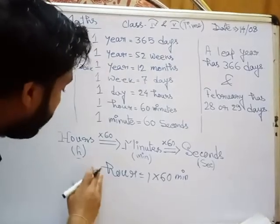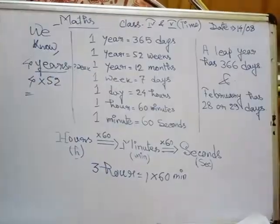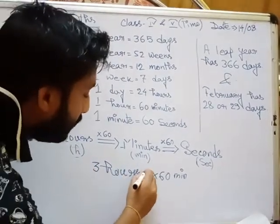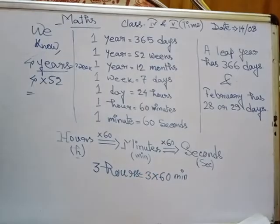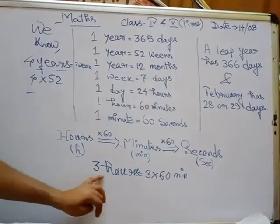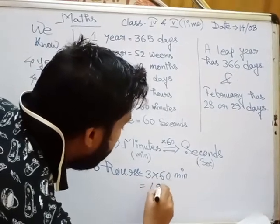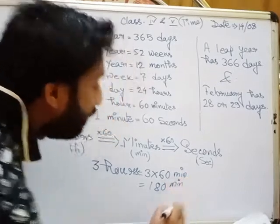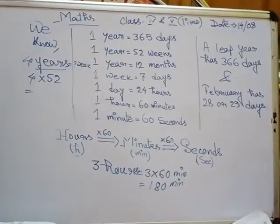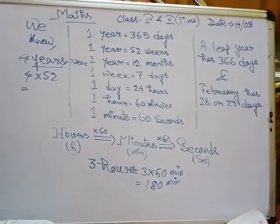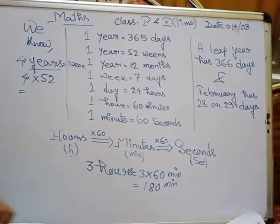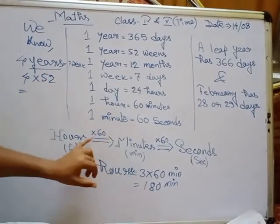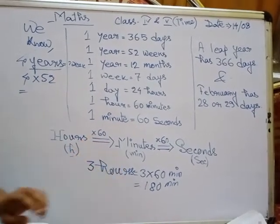If it is 3 hours, that means 60 multiplied by 3. So 3 hours is equal to 180 minutes. Like this, we should convert hours into minutes — we just multiply by 60.